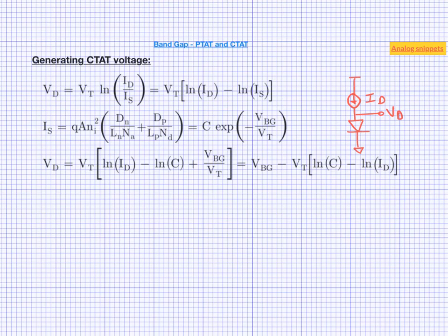The first term VBG is a constant, and second term is a PTAT term. Now if this term in the bracket is positive, we get our desired CTAT voltage. And for this term to be positive, C has to be a bigger number than the current.